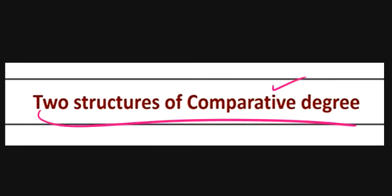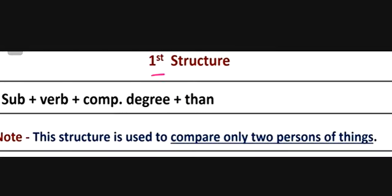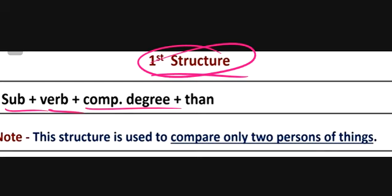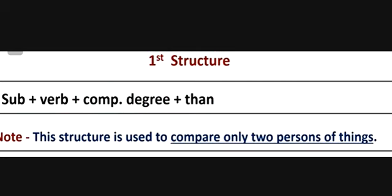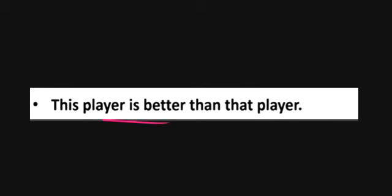We will talk about the two structures of comparative degree. The first structure is: subject plus comparative degree plus 'than'. When we use it to compare, we compare two things. For example, 'This player is better than that player.' So we put the comparative degree and then 'than' to compare two people.